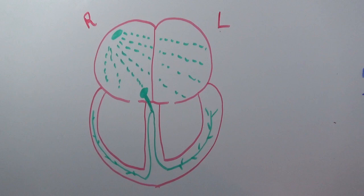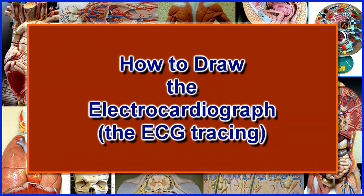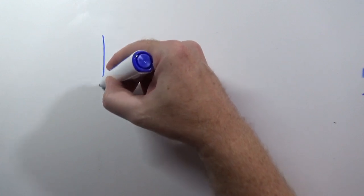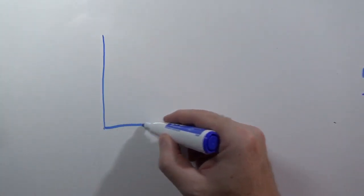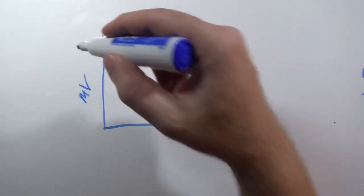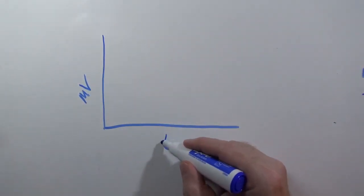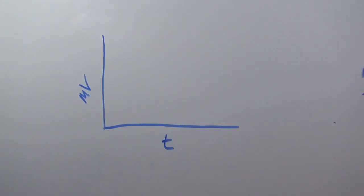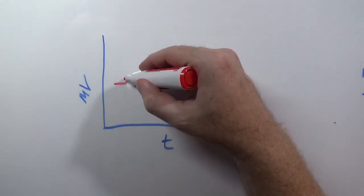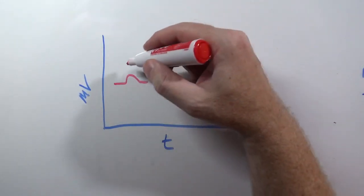Here I'll draw what an electrocardiograph looks like. Y axis, X axis. On the Y axis we have millivolts, and on the X axis we have time. So the first wave I'm going to draw here is the P wave, and the P wave looks like this. I'll label it P, and that represents depolarization of the atria.